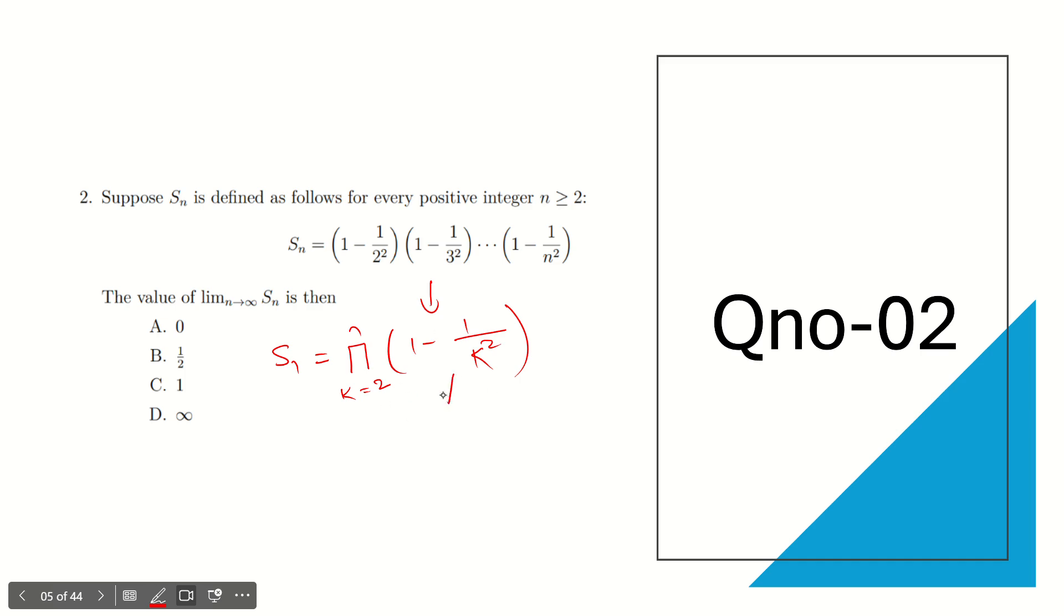Now if I just look at this part, 1 - 1/k², guys, I can solve this as (k² - 1)/k². That is a² - b², so can I write this as (k+1)(k-1) divided by k²? Of course I can write it this way. And that is the product from k=2 to n.